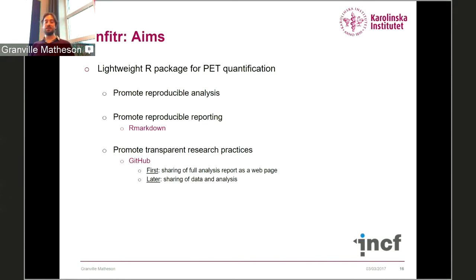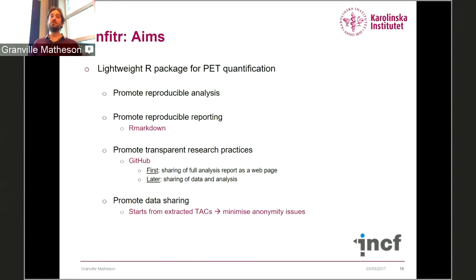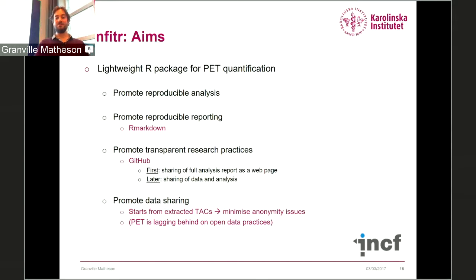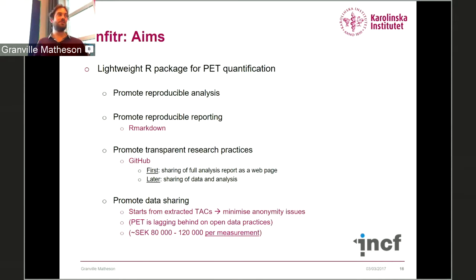We're actually currently preparing a poster for a conference and we're going to include a QR code so people can go to the webpage hosted on GitHub and see the entire analysis step by step. Later, hopefully, there will also be sharing of data. This tool starts with the extracted time activity curves, which gets around all the excuses people have had — 'image files are too big' or 'there are anonymity issues because you can see people's faces.' It just uses little text files containing time activity curve values, vectors of values, to minimize anonymity issues. But PET is lagging far behind on open data practices, primarily because it costs in the region of 80,000 to 120,000 crowns per measurement, so people really don't want to release data unless everyone else starts releasing it too.